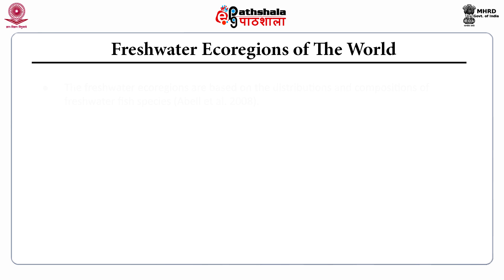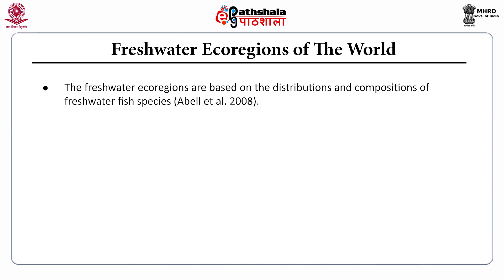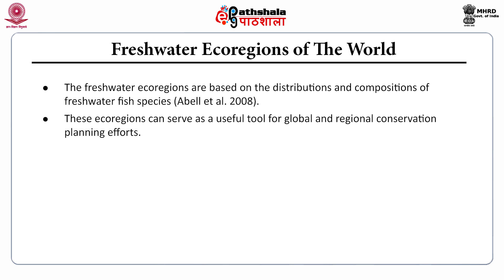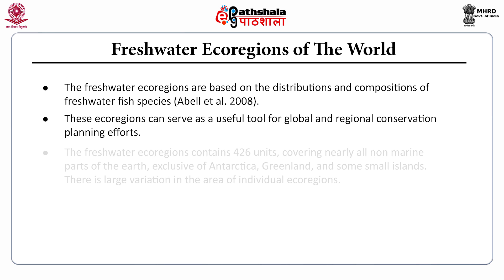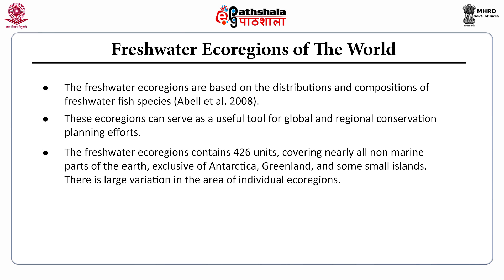Freshwater ecoregions of the world are based on the distributions and compositions of freshwater fishes, according to Abell et al. 2008. These ecoregions can serve as a useful tool for global and regional conservation planning efforts. The freshwater ecoregions contain 426 units covering all non-marine parts of the earth, excluding Antarctica, Greenland and some other small islands. There is a large variation in the area of individual ecoregions.